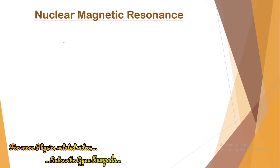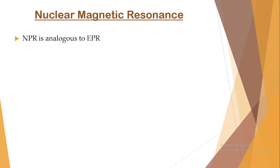NMR is also called NPR, which is analogous to EPR. NPR means nuclear paramagnetic resonance, similar to electron paramagnetic resonance. As we saw in the previous class, paramagnetic resonance means the sample is mainly paramagnetic — that is why NMR is also called NPR, just as ESR is also called EPR.